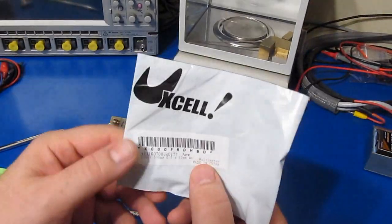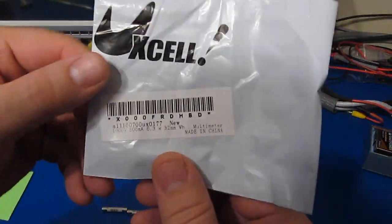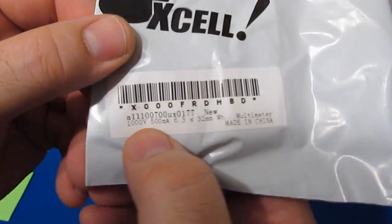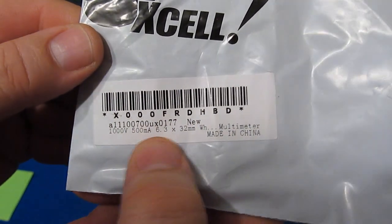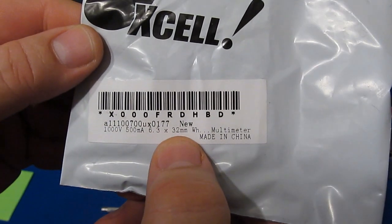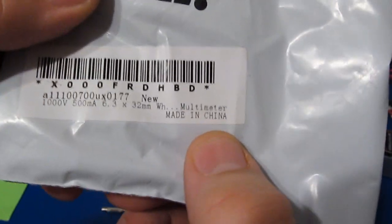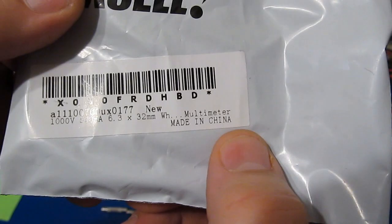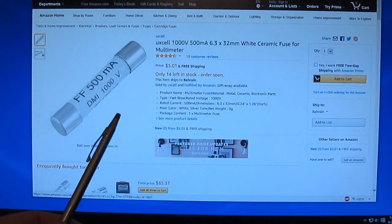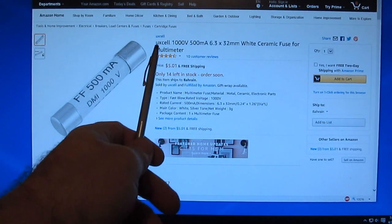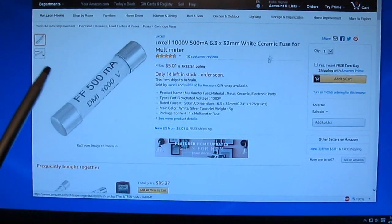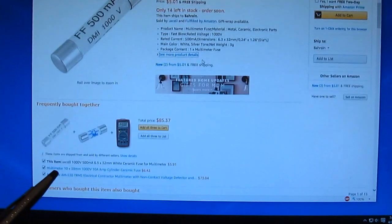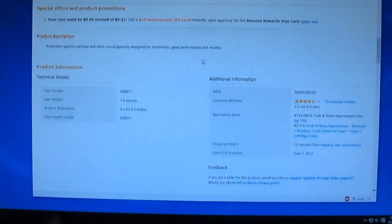Hello again, so I just bought some fuses off Amazon which I believe could possibly be fakes. 1000 volts, 500 milliamps, 6.3 by 32 millimeters, made in China. Looking at the ad from Amazon, you can see UXL 1000 volt 500 milliamp white ceramic fuse. Notice in the ad they never mentioned that the fuse was made by Siba.